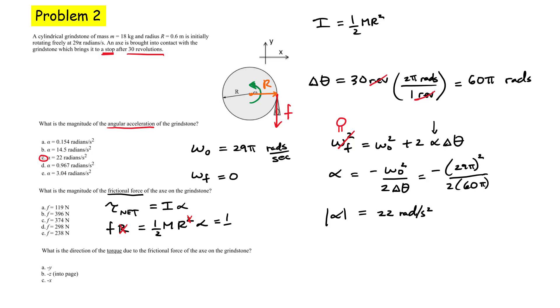You can substitute values now. So you get one half, the mass was 18, the R value was 0.6 meters, and my alpha, I just obtained that, was 22. You put that in a calculator and you should get a frictional force. I did that and I got approximately 119 newtons. So that's the frictional force acting on that wheel. So choice A is probably the best choice for this problem.